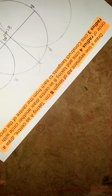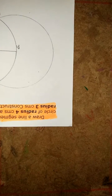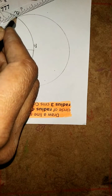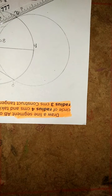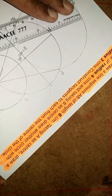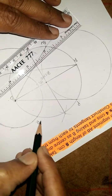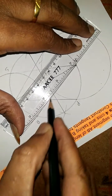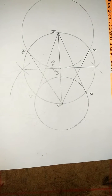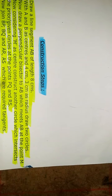Now join PB, AS, and RS. These four are the required tangents — tangents for circle A and circle B. Let me review the construction steps.